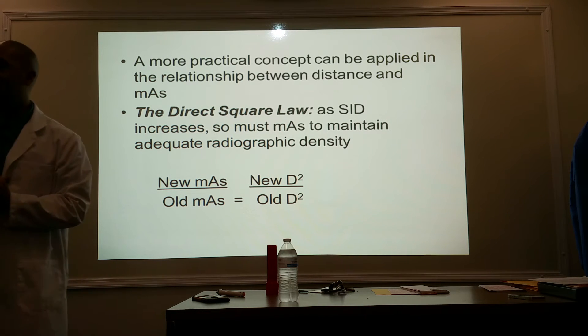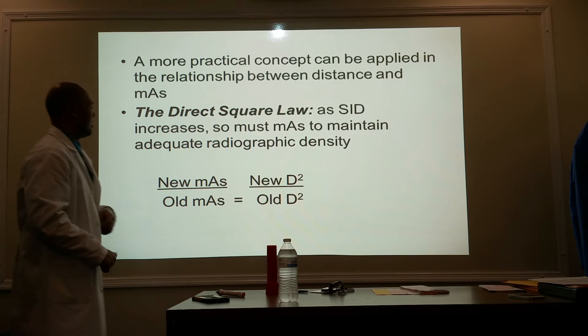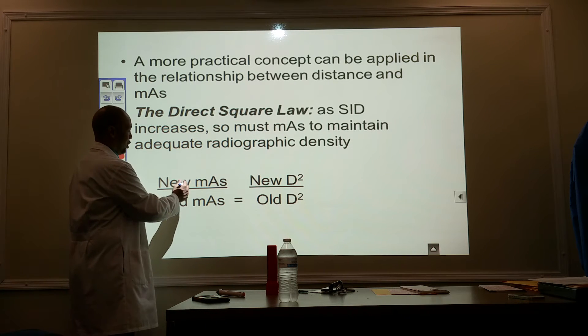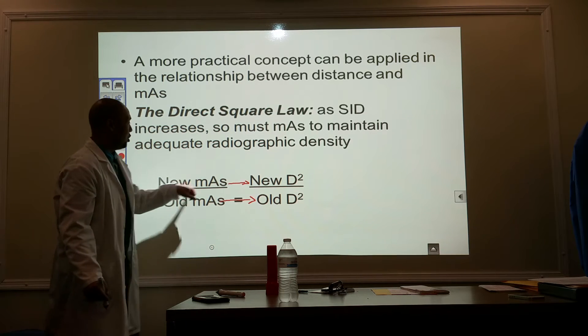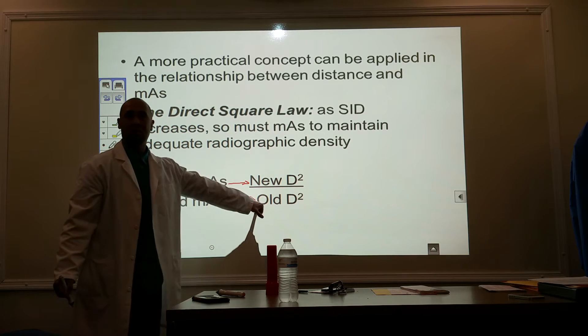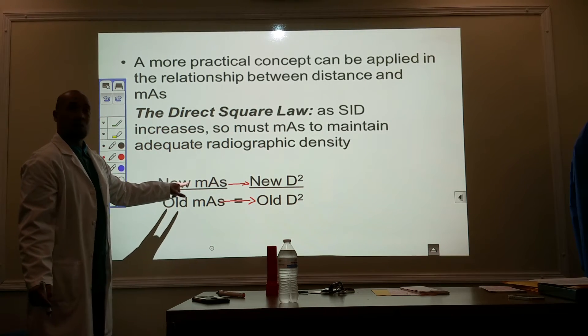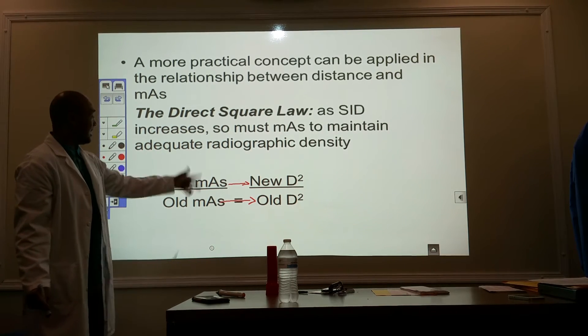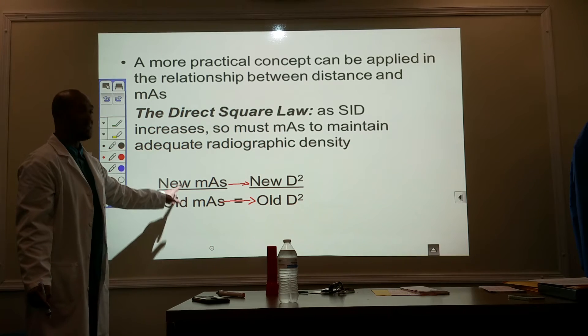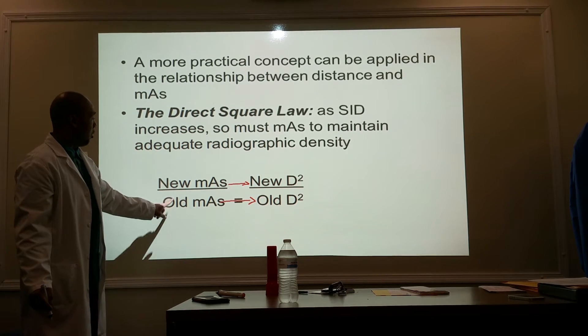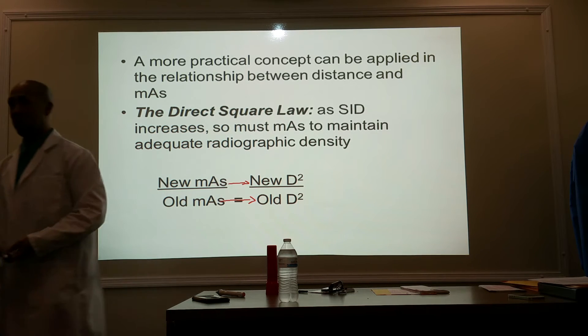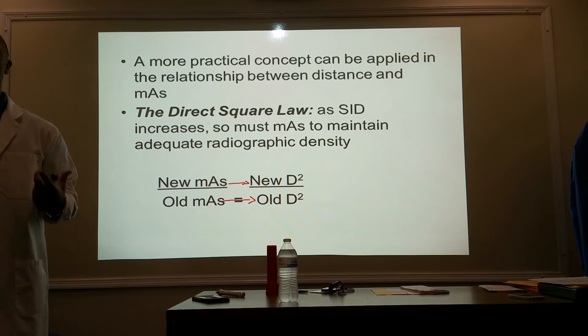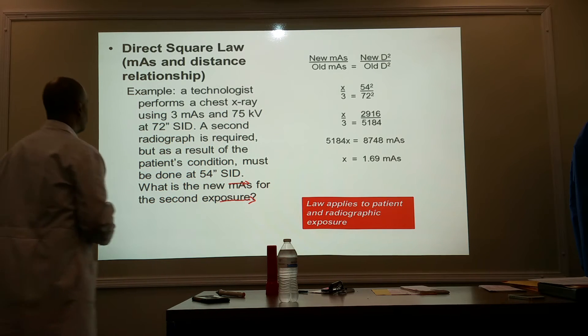The direct square law. This is the direct square law. New, old, new, old. It's direct. New to new, old to old. So, instead of intensity, we're going to put in place mAs. So, our new mAs over old mAs is equal to new distance squared over old distance squared. Because what we're trying to manipulate here is our technical factors. So, the direct square law.